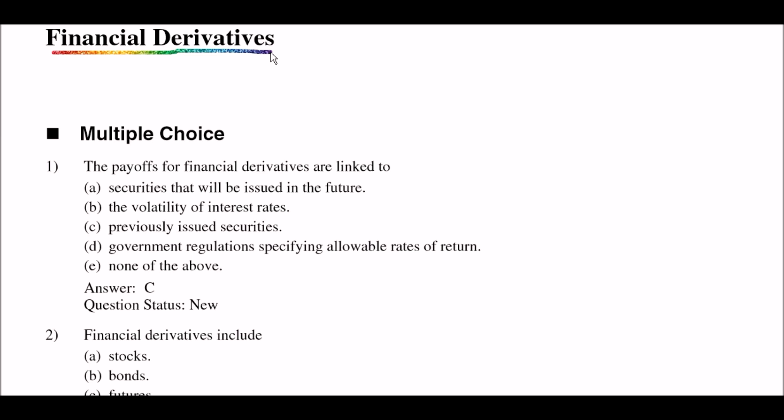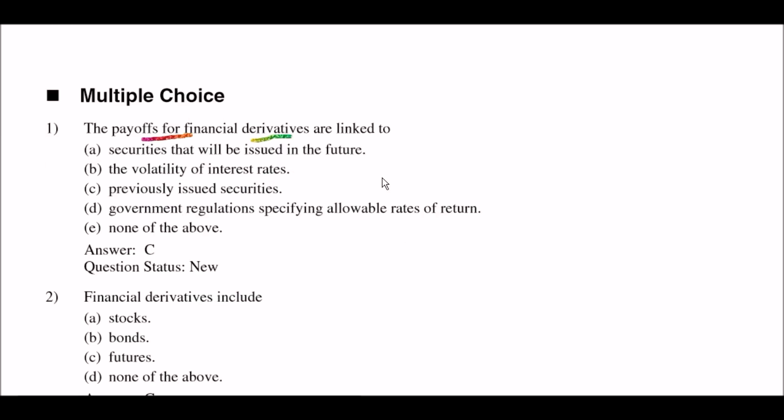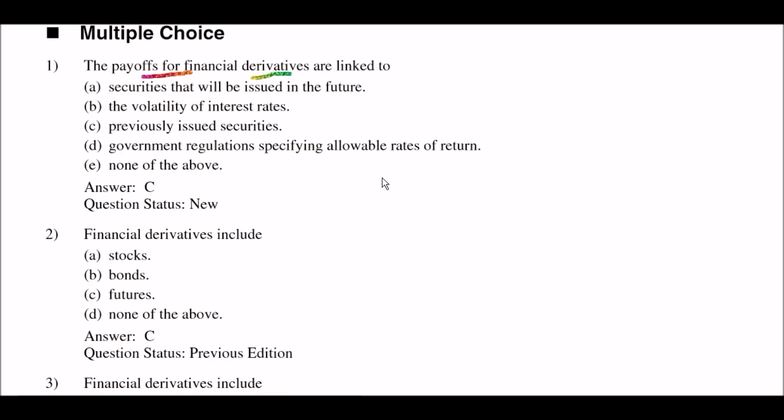Your first question is: the payoffs of financial derivatives are linked to — option A: securities that will be issued in the future; option B: the volatility of interest rates; option C: previously issued securities; option D: government regulation specifying allowable rates of return; option E: none of the above. The right answer is option C: previously issued securities.